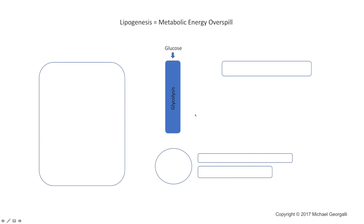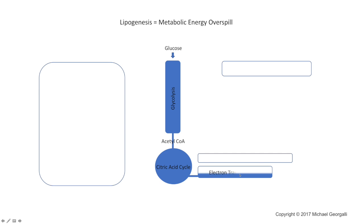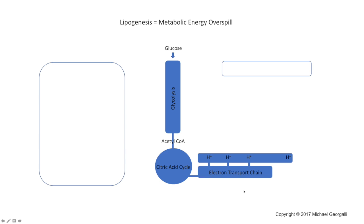Glucose is then converted and eventually gives acetyl-CoA, which then enters into mitochondrial respiration — more specifically the citric acid cycle — which then feeds into the electron transport chain. Those electrons are used to pump protons into the intermembranous space, creating an electrochemical gradient that drives oxidative phosphorylation to generate ATP.